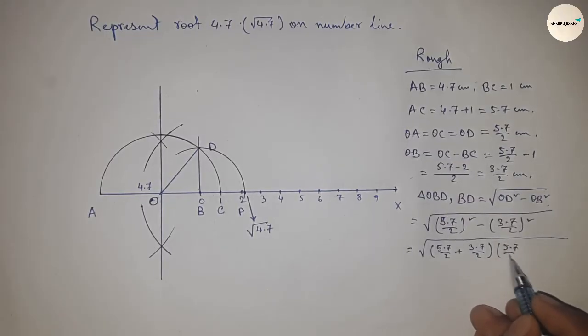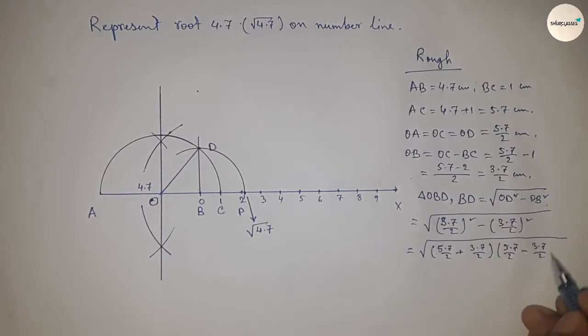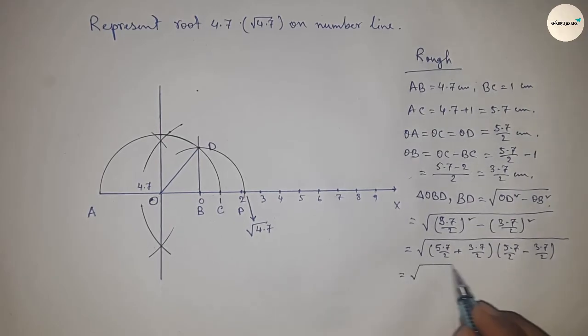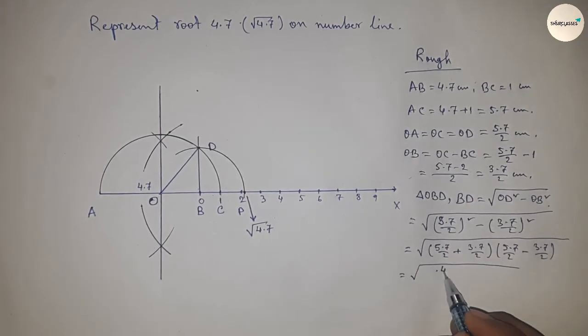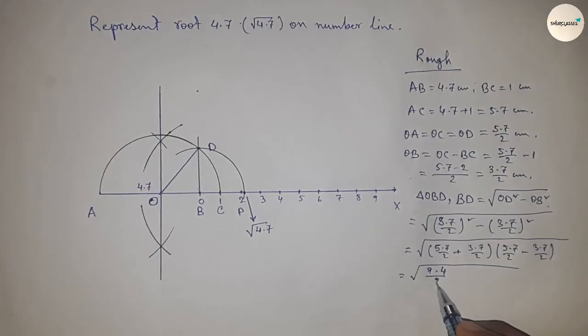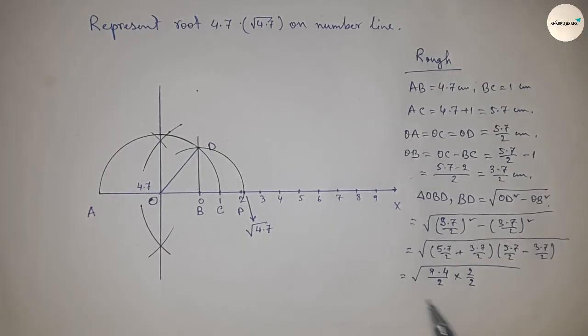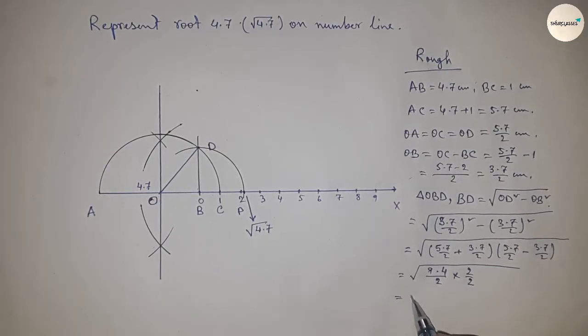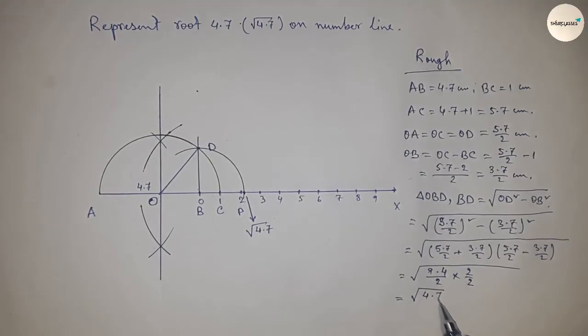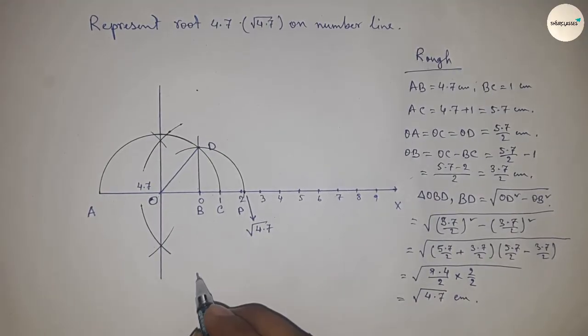Applying the formula: (5.7/2 + 3.7/2) times (5.7/2 - 3.7/2) equals (9.4/2) times (2/2), which equals root 4.7 times 1, giving us root 4.7 centimeters.